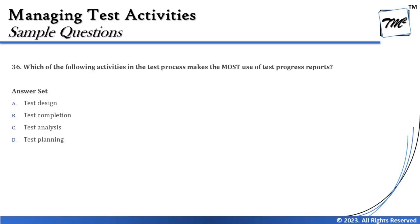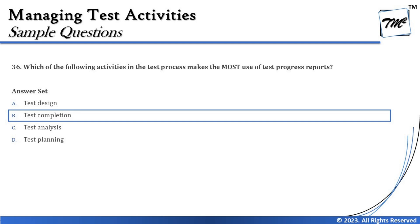So the next best answer is the test completion phase. In the test completion phase, we create a test summary report — also called a test completion report — and we gather data from all the TPRs (test progress reports). That is why test completion makes heavy use of them. During execution, we generate the test progress report; we don't use it. Utilization is done by monitoring and control and the completion phase. The right answer for this question is B — test completion.